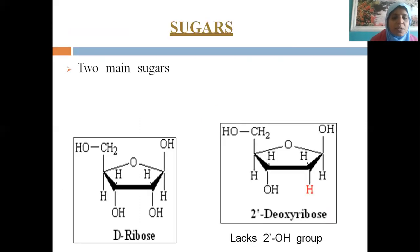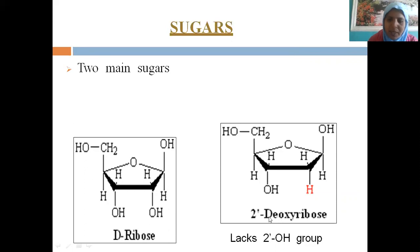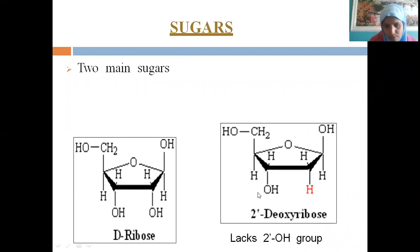Coming to the general features of nucleotides: a nucleotide is made up of sugar, phosphate, and a nitrogen base. The two important sugars are deoxyribose and ribose. The difference between them is that ribose has an OH group whereas deoxyribose has only a hydrogen at the second carbon position.